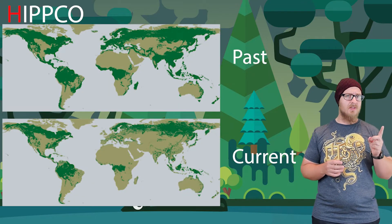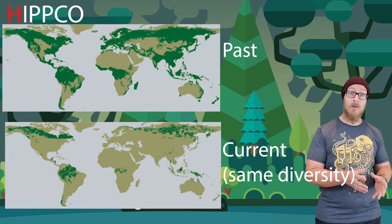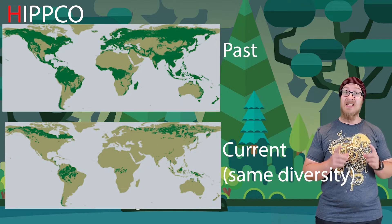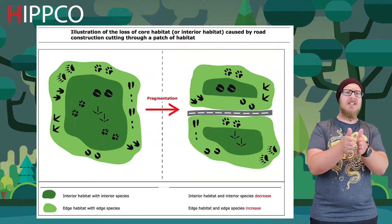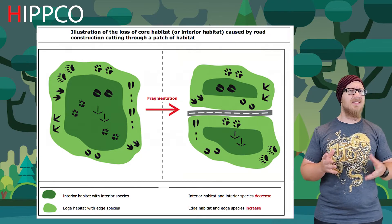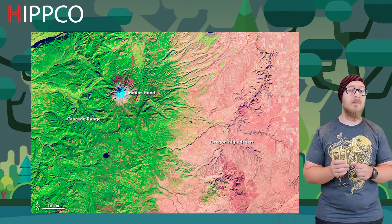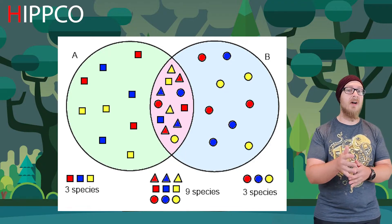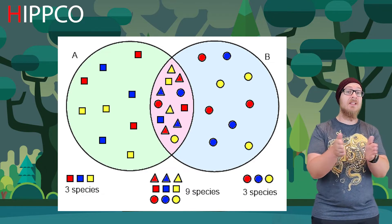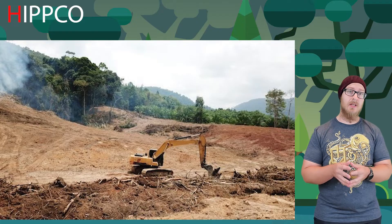Comparing a map of historical and current forest range to one showing forest large enough to support its original biodiversity reveals how much smaller viable habitat has become. This habitat fragmentation leads to an edge effect. The edge refers to a transition zone between two different habitats, sometimes called an ecotone. For example, the ecotone between a desert ecosystem and a forest ecosystem in Oregon near the Cascade Mountains. Naturally occurring ecotones tend to have higher biodiversity due to a greater variety of available niches, and the transition tends to be gradual.